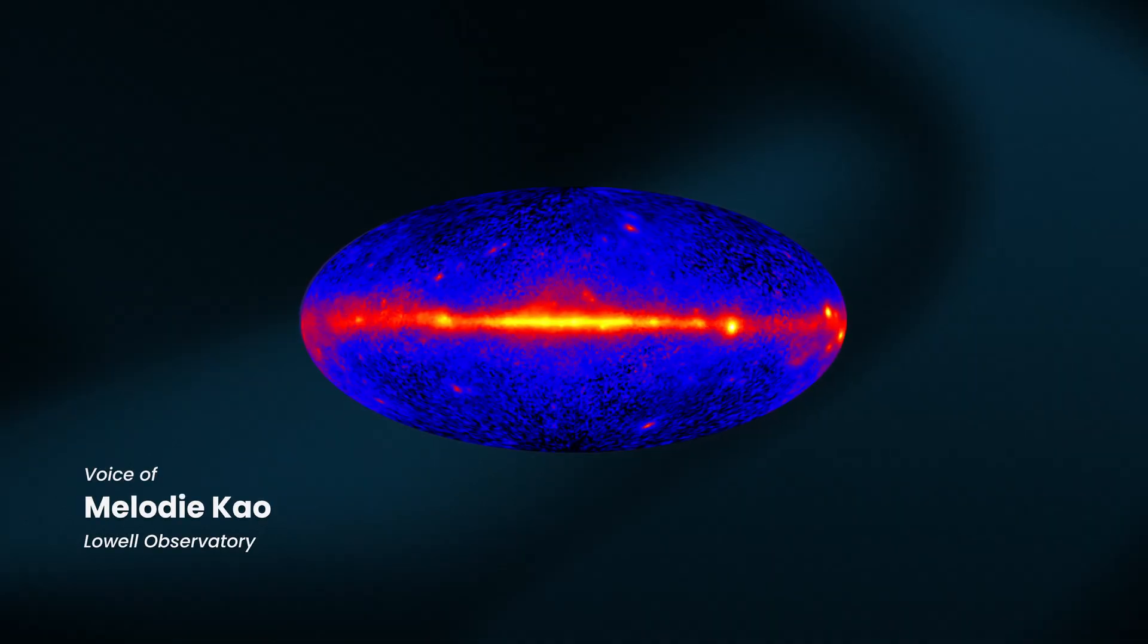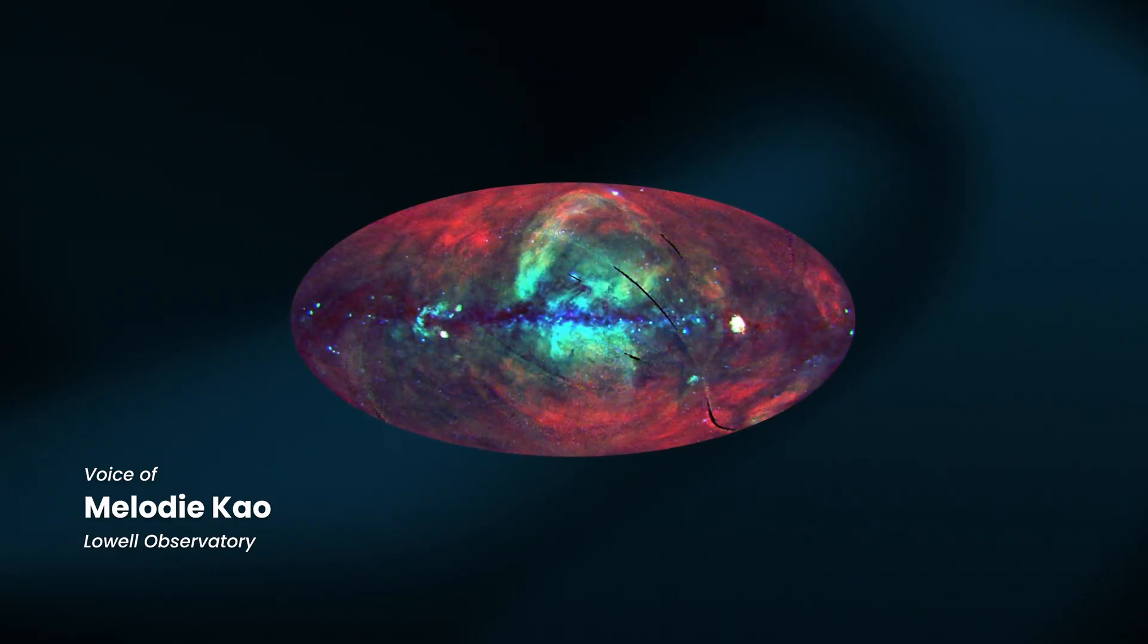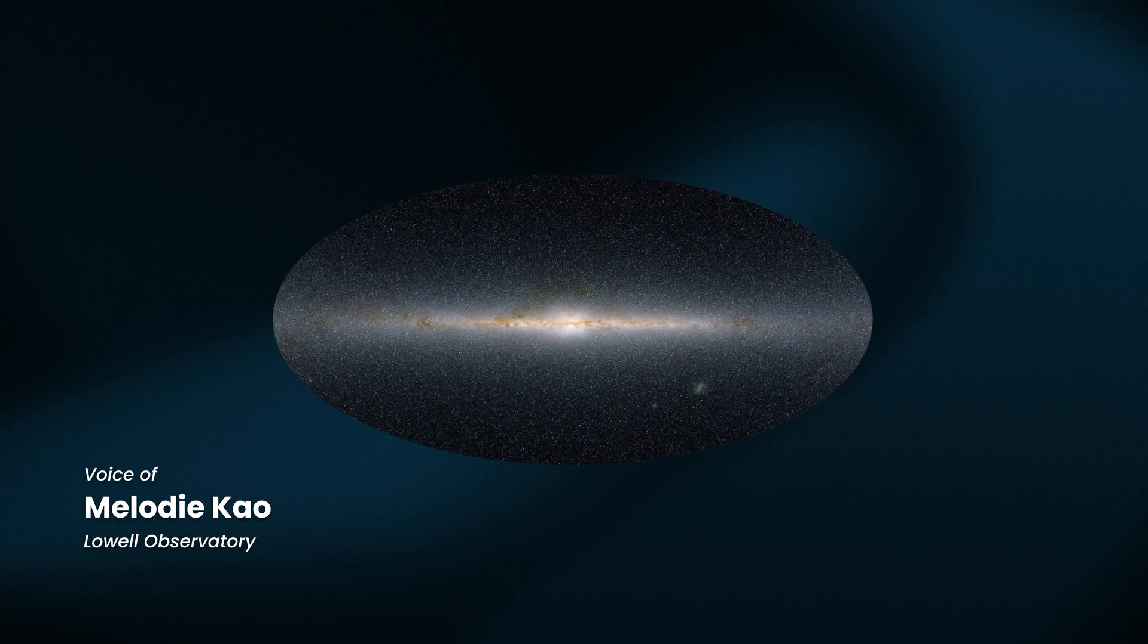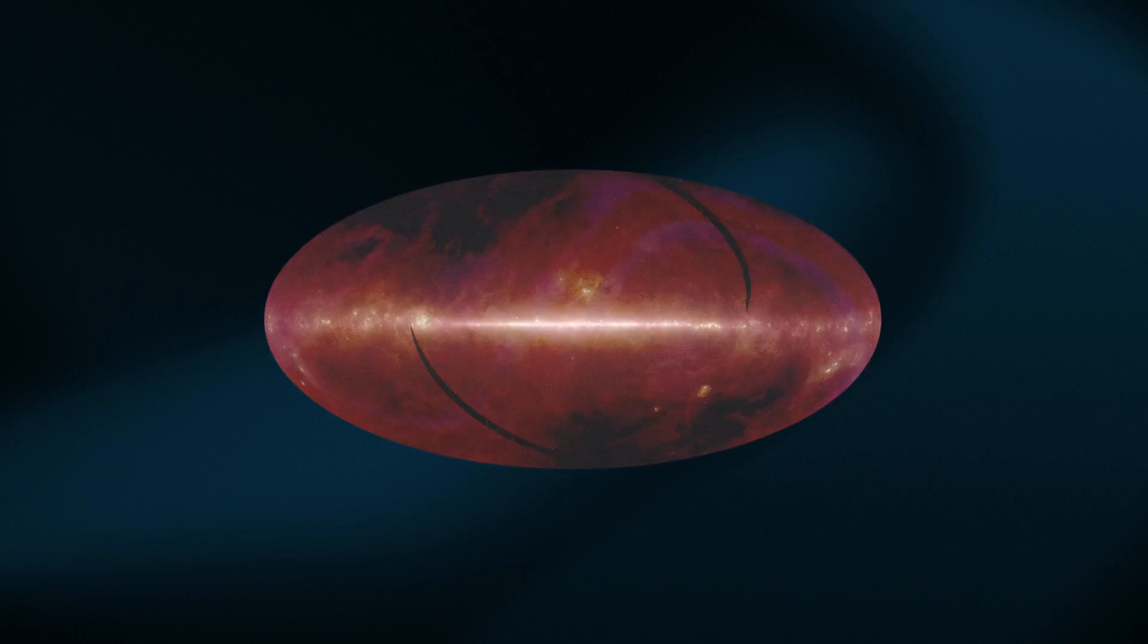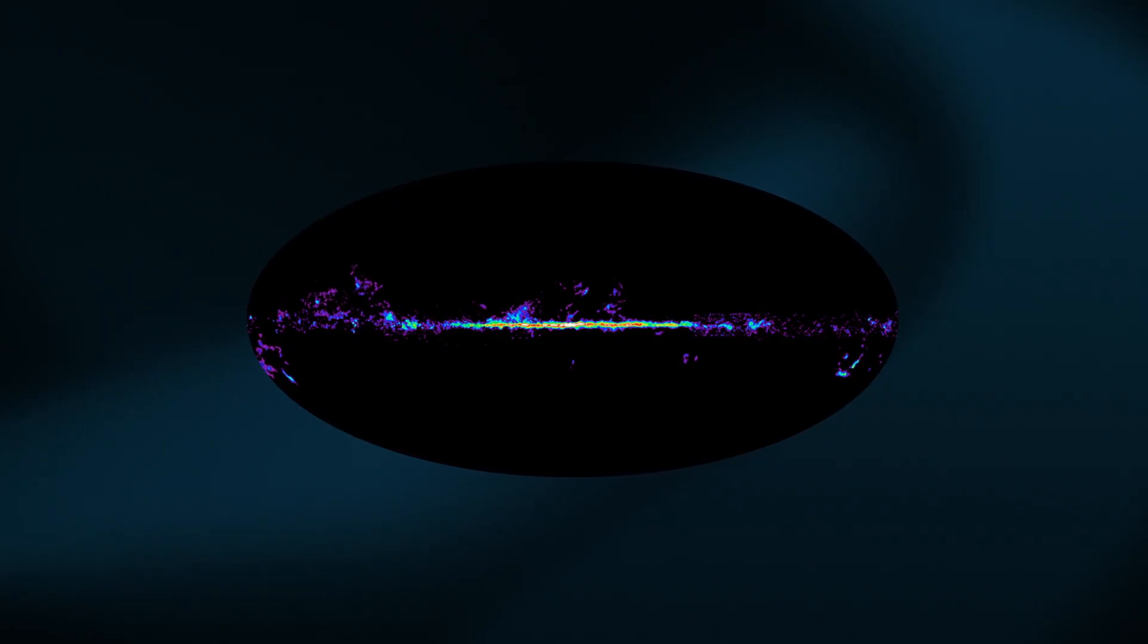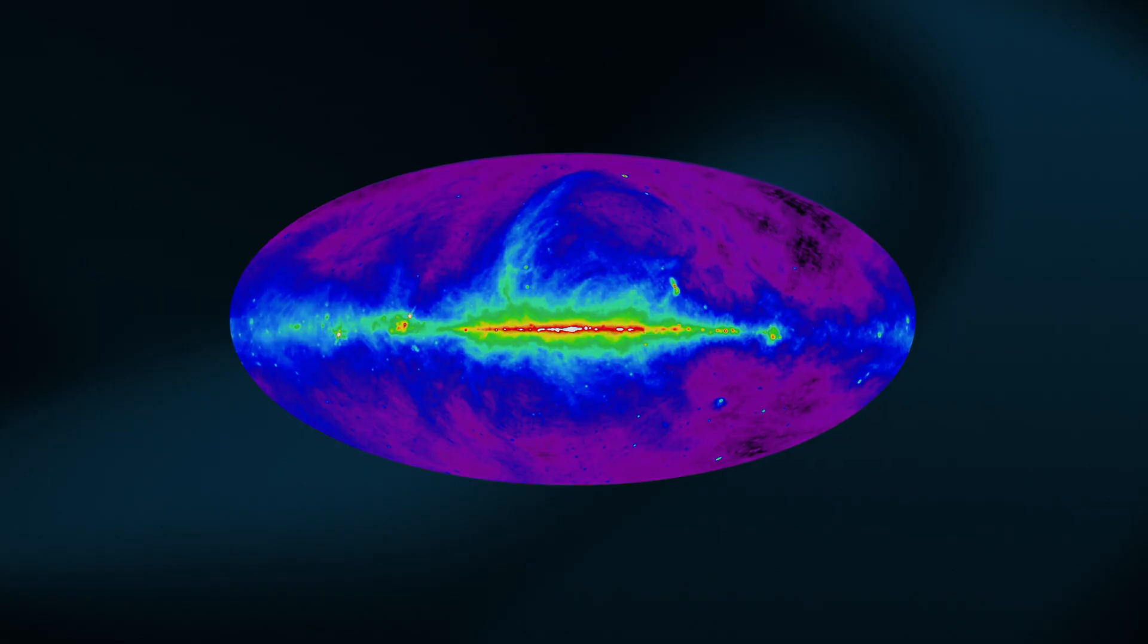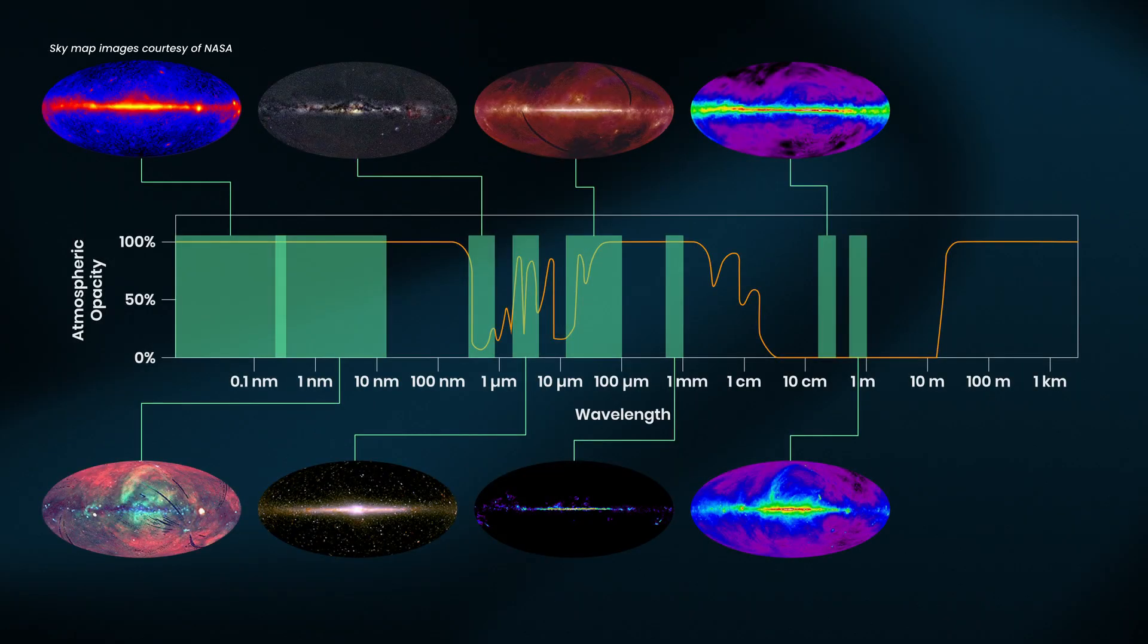Humans have built telescopes on the ground and in space that can see the universe across nearly the entire electromagnetic spectrum, from gamma rays and X-rays through visible light and infrared and even to centimeter radio waves. But we've never seen the sky at the longest radio waves, longer than about 10 to 15 meters or 15 to 20 megahertz in frequency.